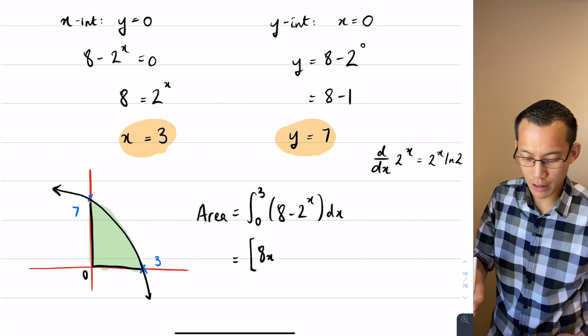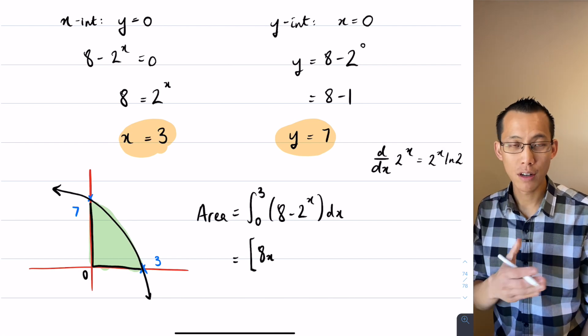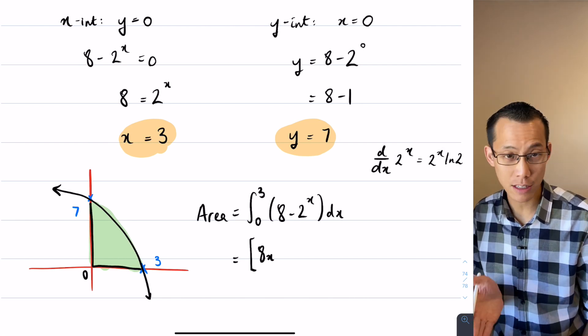If it was 2 to the x you'd get 2 to the x log 2 as your derivative. So you're multiplying by log of whatever the base number is, in this case 2.